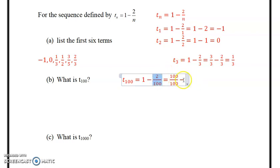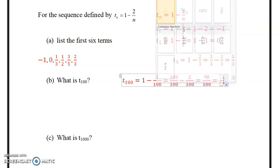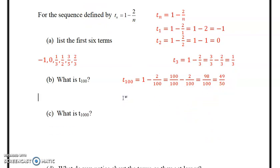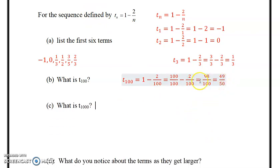We'll put in 1 minus 2 over 100, which is the same as 100 over 100. You don't have to show that if you understand that one is equivalent to 100 over 100 minus 2 over 100, which is obviously equal to 98 over 100, which can be simplified.